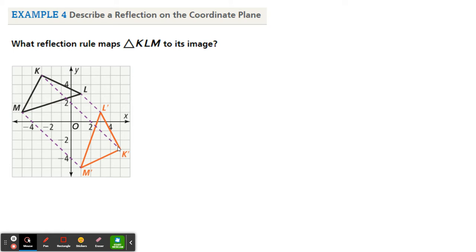Well, what I want to do here is I want to talk about the rule and then I want to talk about the line of reflection. So let's just look at the points real fast. So K is at the coordinates negative 3, 5. K prime is at the coordinates of 5, negative 3.